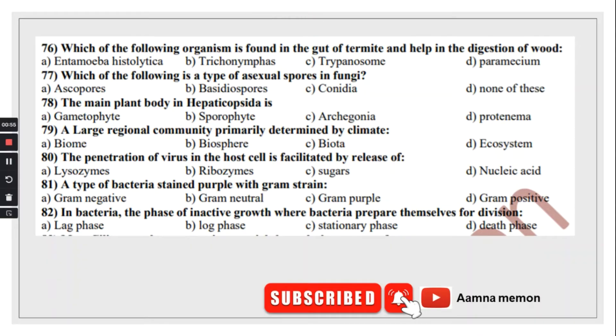Which of the following organism is found in the gut of termites and helps in the digestion of wood? In the wood, there is cellulose. So, there are enzymes to digest it which termites can't produce. Basically, there are some protozoa and bacteria that produce enzymes to help digest the cellulose.